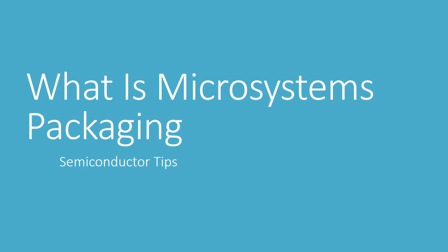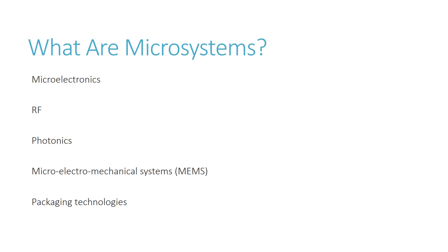In this video we are going to know what microsystems packaging is. To answer the question we need to know what microsystems are. Microsystems are macro miniaturized and integrated systems based on microelectronics, radio frequencies, photonics, and microelectromechanical systems and packaging technologies. These five elements have been the five technology waves for microelectronics.